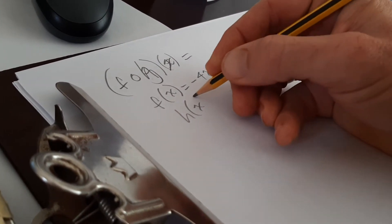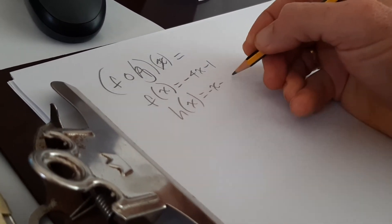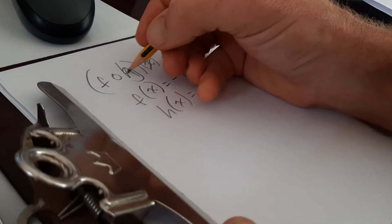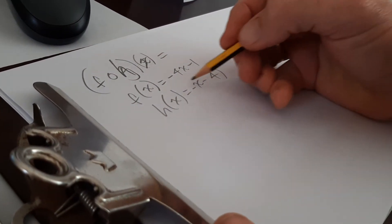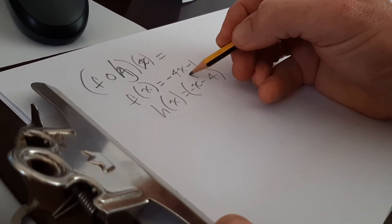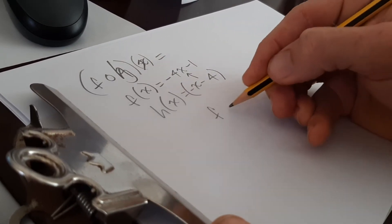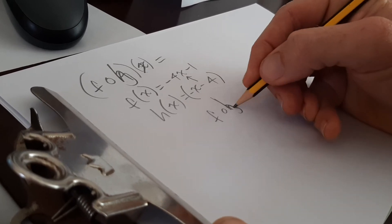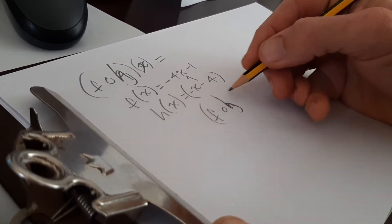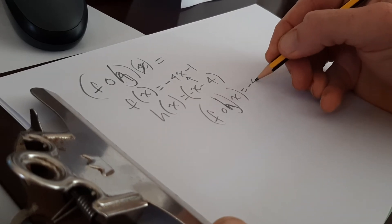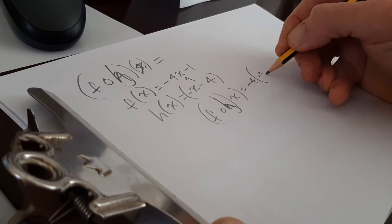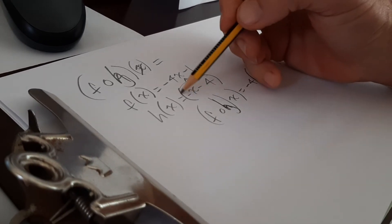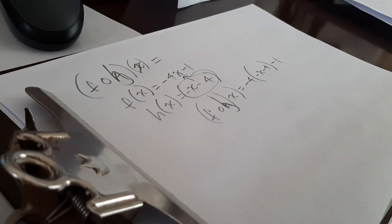And h of x equals minus x minus 4. So this means f swallows g, or it's h. f swallows h. So I take this, make sure it's in brackets, and I substitute it for x. So f swallowing h, or I keep putting g, f swallows h of x equals minus 4 times brackets minus x minus 4 minus 1.